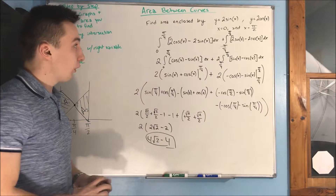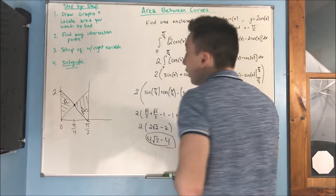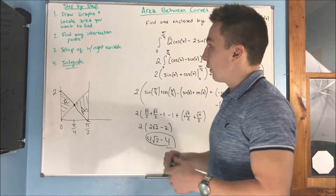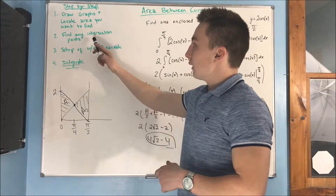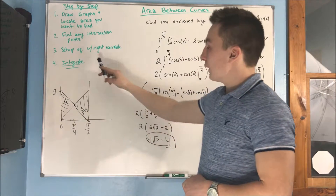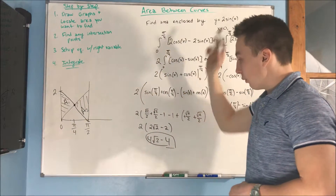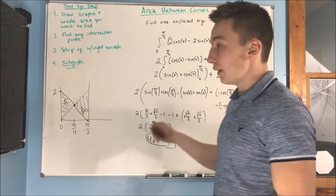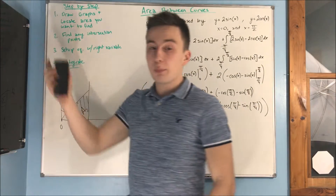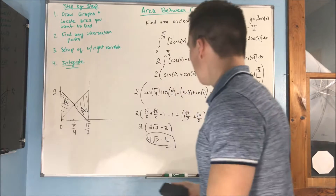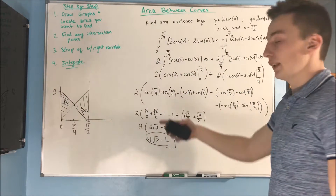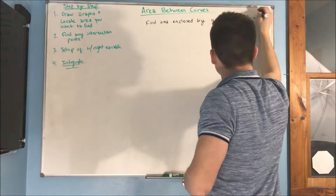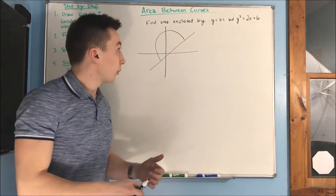To recap: we drew our graph, found the area we needed, found our intersection point, set up our equation with the right variable, and integrated. The most tedious process is just the integration part — they'll probably throw some pretty nasty integrals at you that require a lot of evaluating. Alright, here's our next problem.